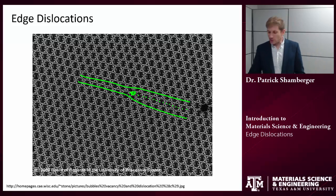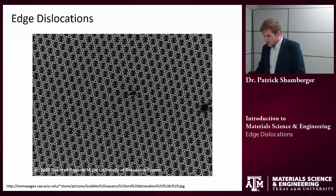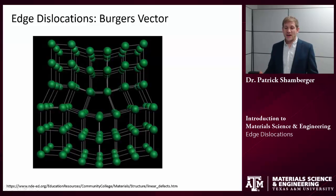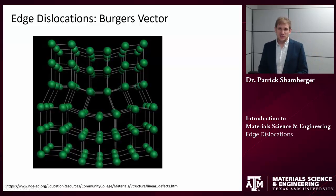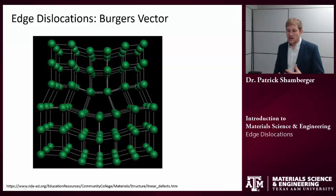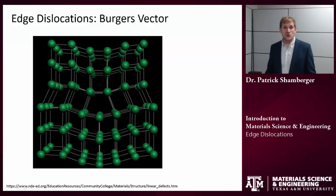As a side note, if we look closely we see another kind of a defect, and that's a point defect called a vacancy. So the first thing that we're going to talk about is the Burgers vector of an edge dislocation. The Burgers vector is an important concept because it helps describe the character of a dislocation in a material.